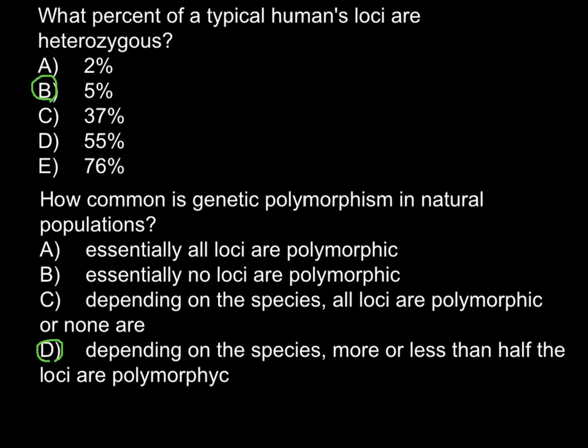Scientists consider alleles only such variants of a gene that are present in more than 1%. So if you have one allele present at 99.5% and another represented at 0.5%, that second variant is not considered an allele — it would be considered a mutant gene. So not all genes have many variants; most just have different forms of mutants.